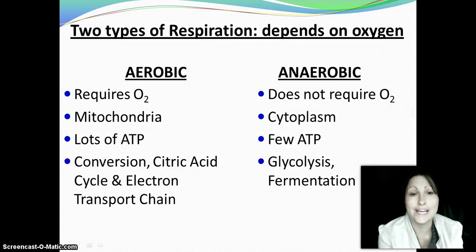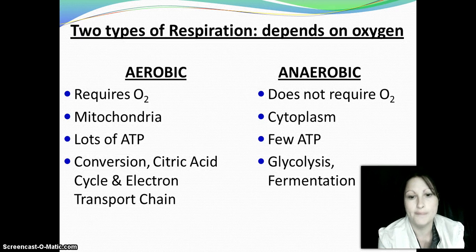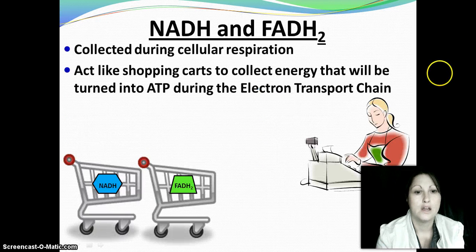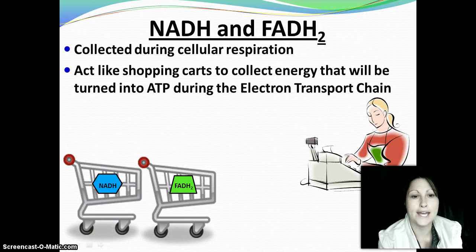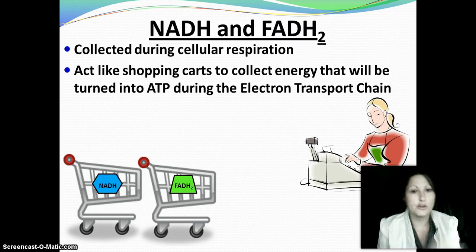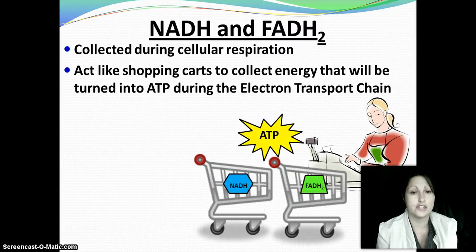Over here on the right is anaerobic, which is kind of plan B. This is when you don't have enough oxygen available. You can still make a little bit of ATP, but not a whole lot. This is going to occur in the cytoplasm, and our two steps are going to be glycolysis and fermentation. Along the way, we're going to pick up two chemicals — NADH and FADH2. Think about these as little shopping carts that we collect along the way, and we fill them with energy that we'll convert into ATP at the electron transport chain.